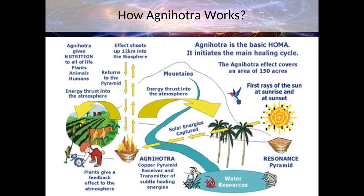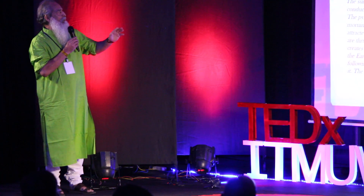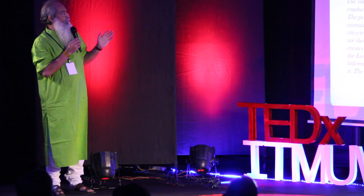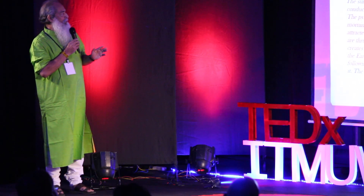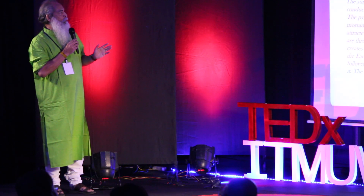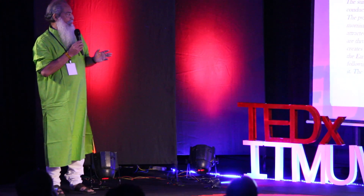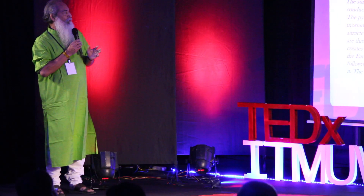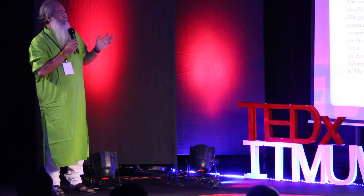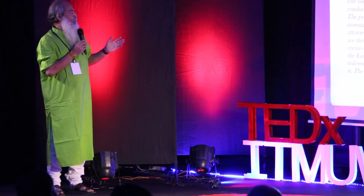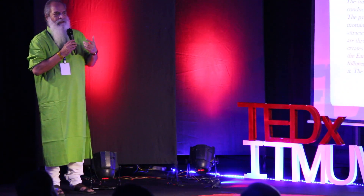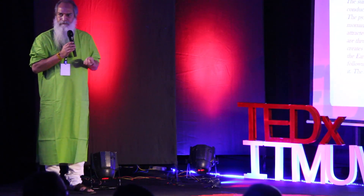This is how Agnihotra works on the whole environment. The effect shoots up to 12 kilometers in the biosphere, and this is proven time and again. The sun brings on or takes the energy which makes all conditions continue the anti-pollutionary change. The pyramid is the generator; the fire, the turbine. At morning Agnihotra, all the electricity, energies, and ethers are attracted to the pyramid in its shape. At sunset, these energies are thrust out in the same shape. This flood of energies at sunrise creates strong purifying effects on all levels wherever it touches the earth, and it is a combination of mantras and this effect that reaches over 12 kilometers.